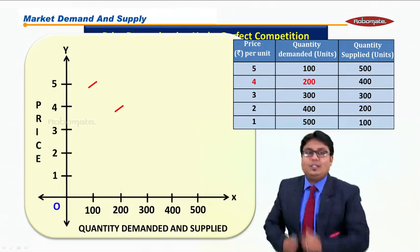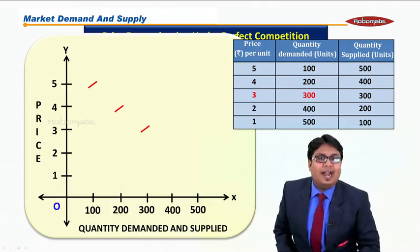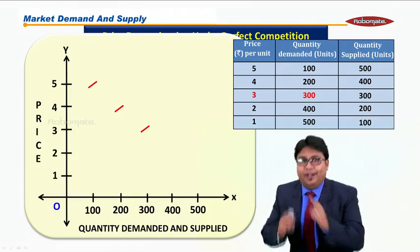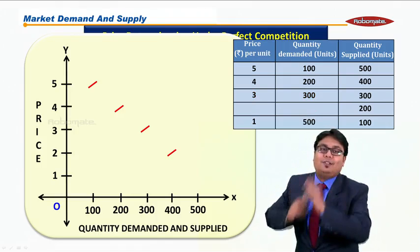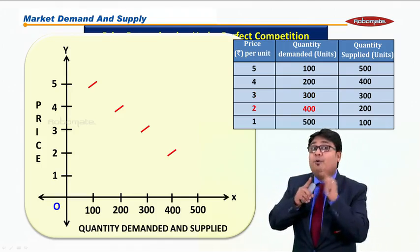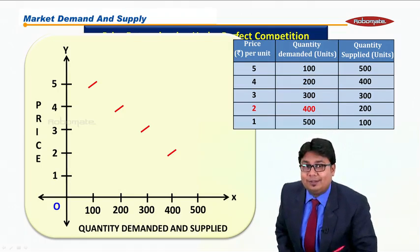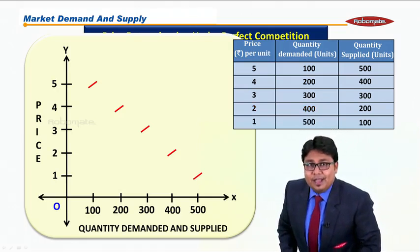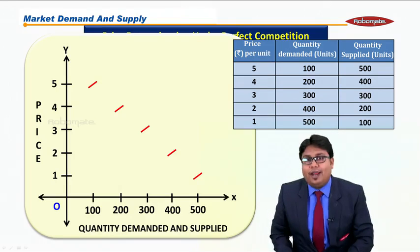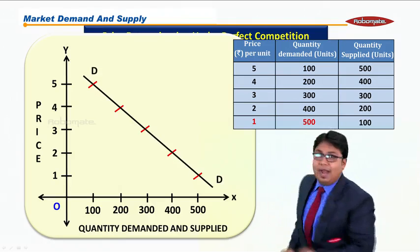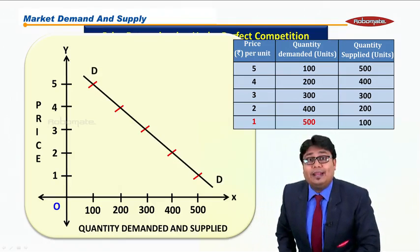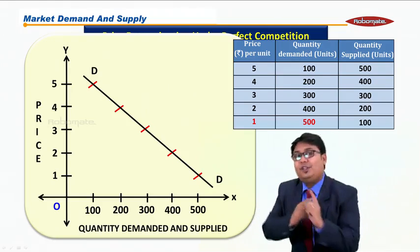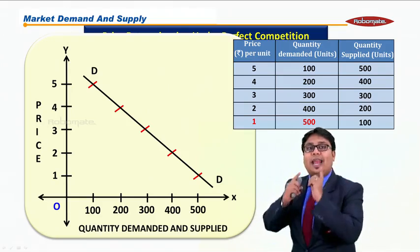Next is when price is 3, demand is 300. We are plotting these points on the graph. Further, when price is 2, demand is 400, and finally when price is 1, demand is 500. Now if I connect all these points, I'll get a demand curve and this demand curve is downward sloping. Why? Because the relationship between price and demand is inverse.